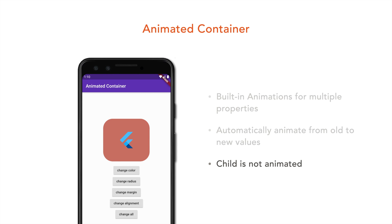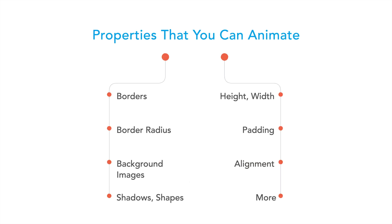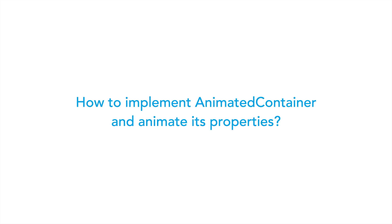Note that the child itself is not animated, and any nested widgets inside the child widget are also not animated. Here are the properties you can animate using AnimatedContainer: border, border radius, background images, shadows, shapes, height, width, padding, alignment, and more.